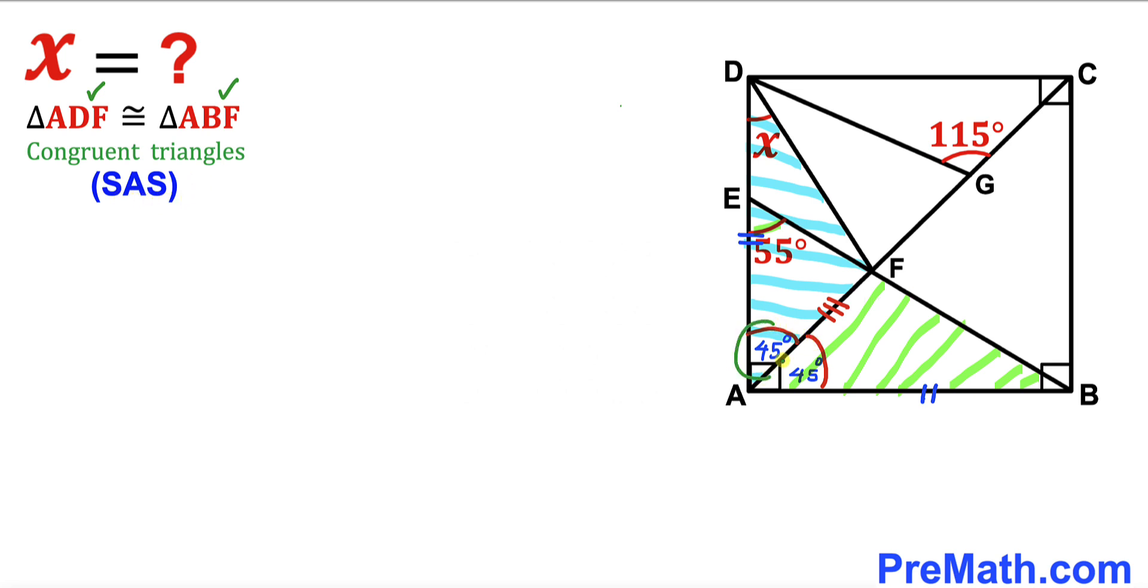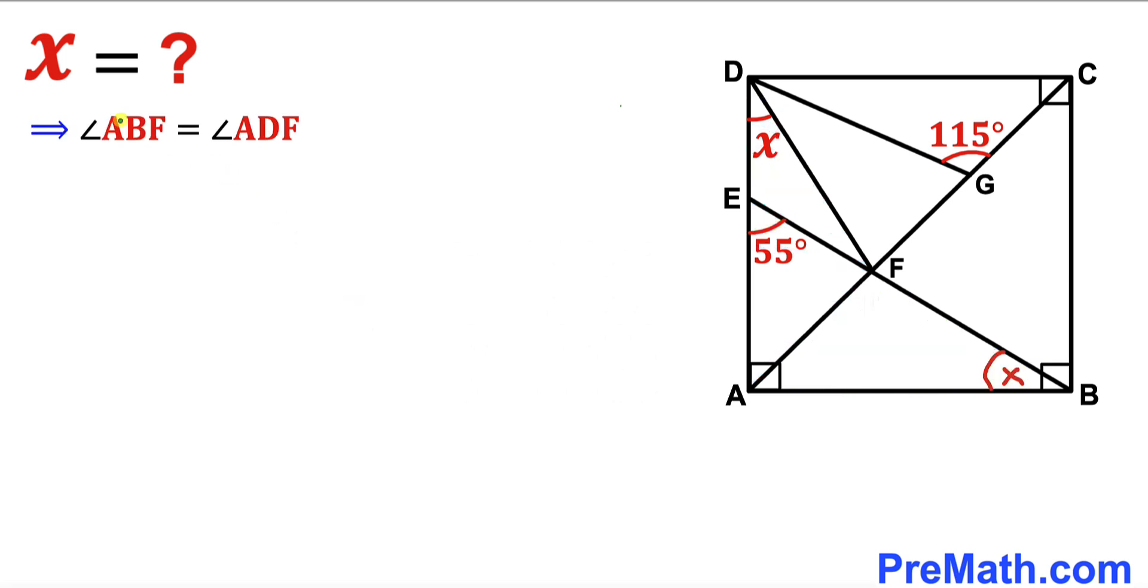This angle is 45 degrees, this angle is 45 degrees as well, these two side lengths are equal, and this is our common side. Therefore, if these two triangles are congruent, then angle x at ABF equals angle x at ADF. Here's our next step.